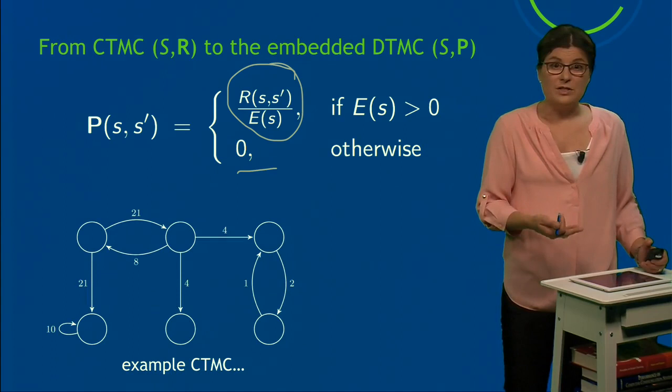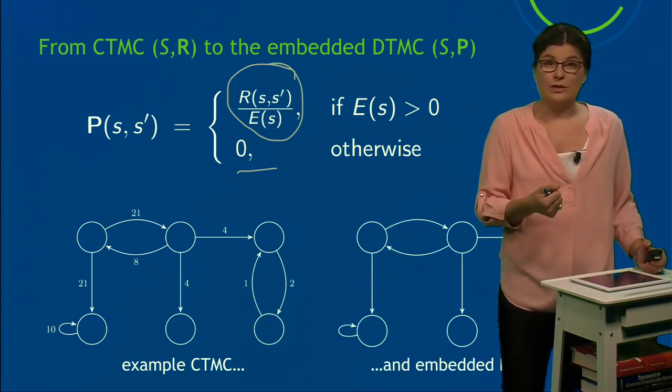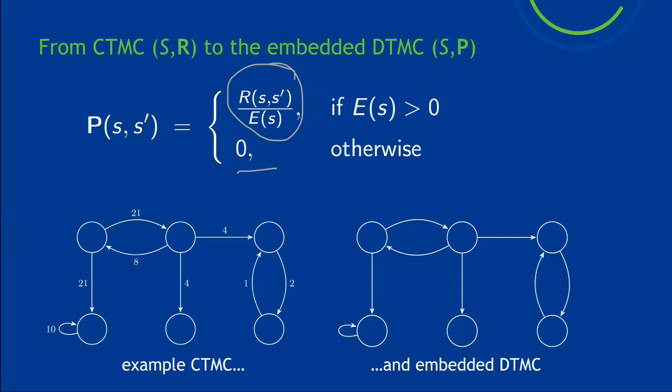So let's do this on a CTMC with six states. Of course, the embedded DTMC that we want to derive also has six states, the exact same structure. Now we only have to derive the probabilities. So let me start with state 0. I have to come up with the exit rate: 21 + 21 is 42. So 21/42 is 1/2. Same here, 1/2. Moving to state 1, the exit rate is 16. So that gives me 1/2 here, 1/4 here, and 1/4 here. Next state, let me call this 2. Exit rate is 2, so this is 1. And for state 3, we get 1 here as well. And now I only have to derive the probability for this self-loop, and that is 1 as well.